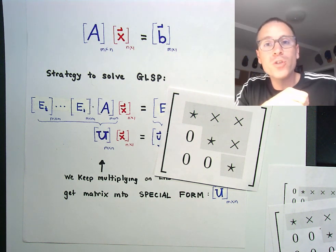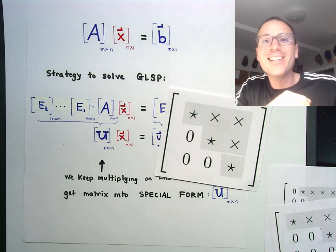In the next video, we'll go ahead and define what reduced row echelon form is and compare and contrast those two. See you there.